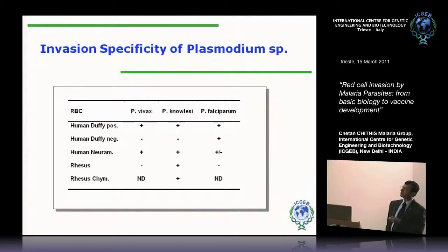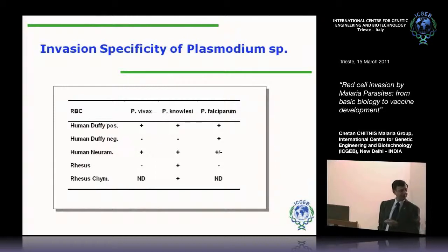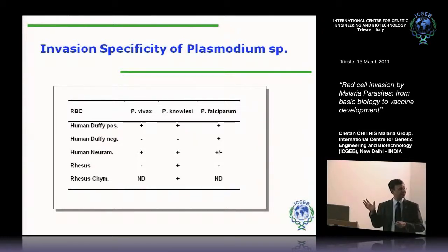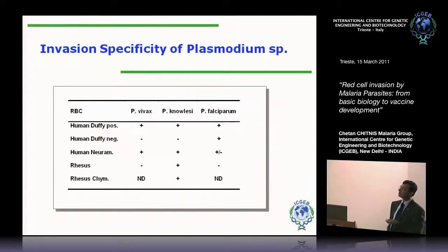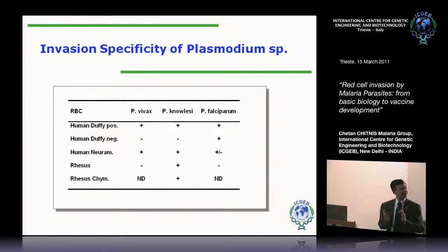Nolzi is a simian malaria that infects rhesus monkeys, and we use it as a model. It can also infect human red cells, but it requires interaction with Duffy for invasion into human red cells. It will invade Duffy-positive but not Duffy-negative. If you take rhesus red cells and treat them with chymotrypsin to remove the Duffy antigen — which is chymotrypsin-sensitive — Nolzi still invades, suggesting that some parasites must have multiple invasion pathways, so there could be redundancy. Falciparum doesn't require Duffy — it uses sialic acid residues on glycophorin molecules — and like Nolzi, falciparum also appears to have redundancy in the receptors it can use.